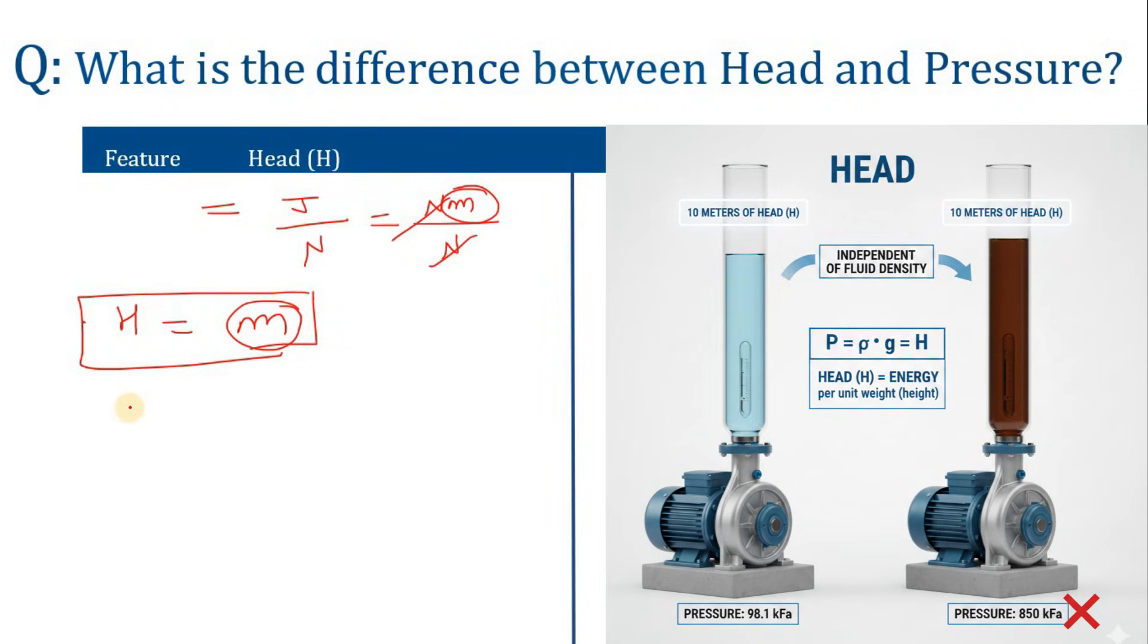It means that let's suppose you have one pump, and I am saying that the head of this pump is 40 meters. So what is the meaning of that 40 meters? It means that a pump can lift any fluid, whether it is water or oil or hydrocarbon, any fluid. That pump can lift 40 meters irrespective of any fluid you are using. That is the meaning of the head, that is the meaning of independent of density.